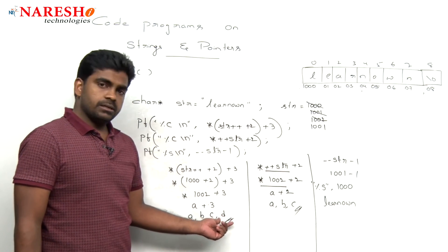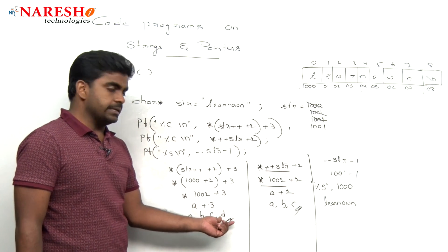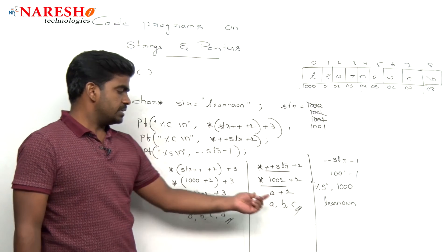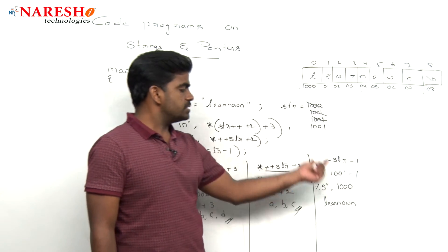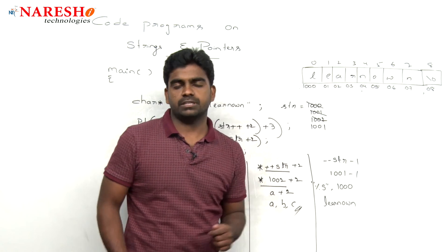So that first expression result is d, second expression result is c, and that last expression result is a string. So the complete string will display after evaluation of expression.